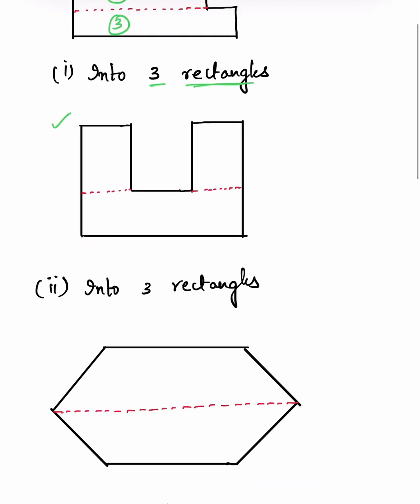Similarly, for the second figure, we again have to divide it into three rectangles. We draw these two red lines so that the entire figure is divided into the first rectangle, second rectangle, and third rectangle. The area of a rectangle is length into breadth, so adding the areas of these three rectangles gives the area of the entire figure.